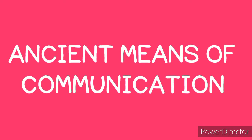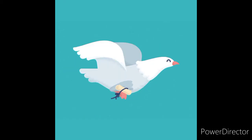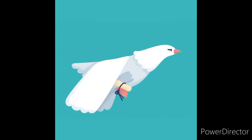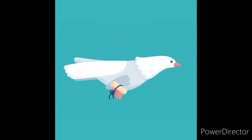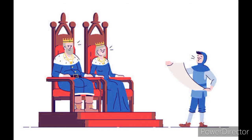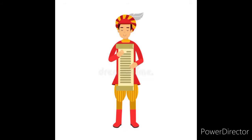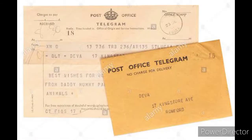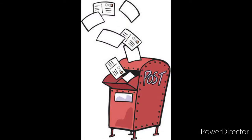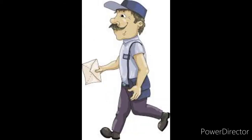Ancient means of communication: years ago, messages were sent by tying a letter to the foot of a pigeon. Then slowly, during the time of kings, when they wanted to send messages from one kingdom to another, they had people called runners, and messages were sent through these runners. In later times, telegrams and postal services came into use. But all these methods were very slow compared to modern methods.